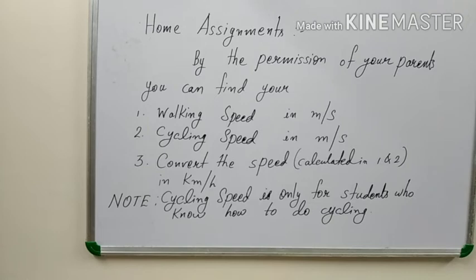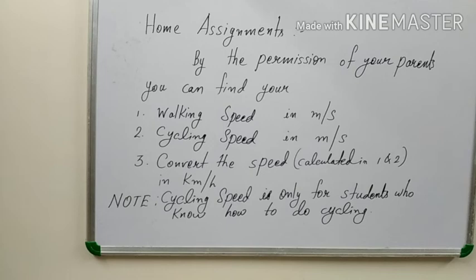Your home assignment is to find out your walking speed and cycling speed in meters per second, but for this you have to take permission of your parents. Third, convert the speed you calculated in numbers 1 and 2 into km per hour. The cycling speed is to be calculated only by students who know how to cycle.